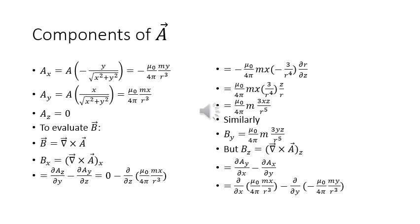In order to evaluate B, we recall that B = curl A. So Bx equals the x-component of curl A, given by ∂Az/∂y − ∂Ay/∂z, which equals 0 minus ∂/∂z (μ₀mx / 4πr³). This equals −μ₀mx · (−3/r⁴)(∂r/∂z) = μ₀mx · 3/(r⁴) · z/r. We use the standard result that ∂r/∂z = z/r, ∂r/∂y = y/r, and ∂r/∂x = x/r, where r = √(x² + y² + z²).